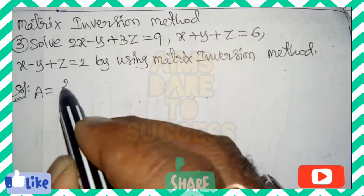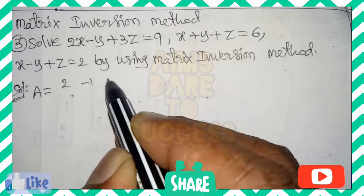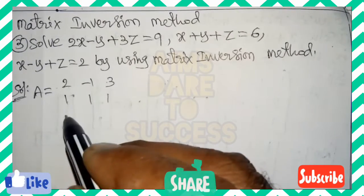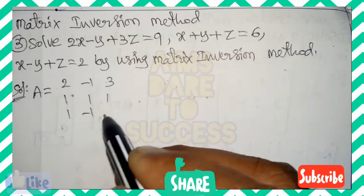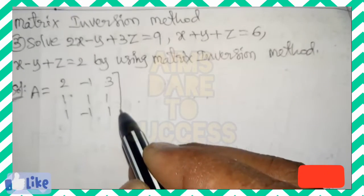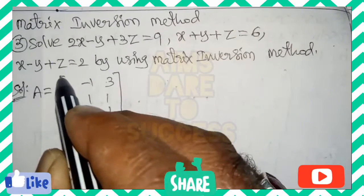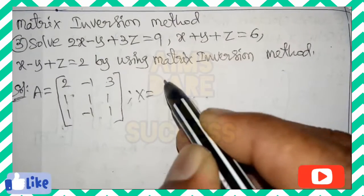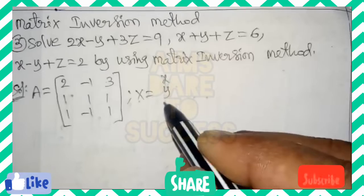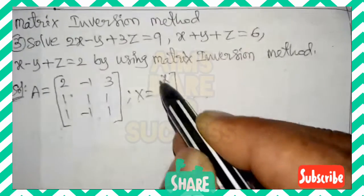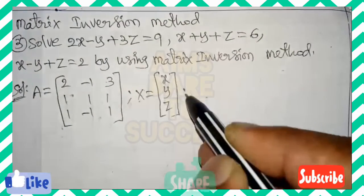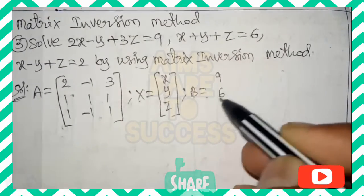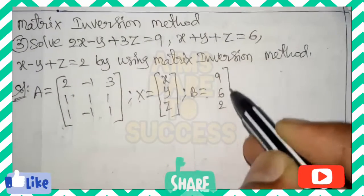Now we can write the A matrix — the xyz coefficients from the given three equations: 2, -1, 3 / 1, 1, 1 / 1, -1, 1. Next we write the capital X matrix with variables x, y, z in column form. Then the B matrix with constant values from the right-hand side: 9, 6, 2, written column-wise.